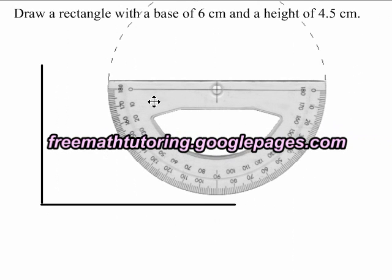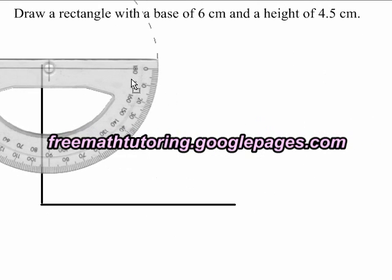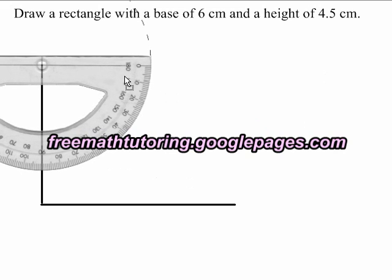At the top of the upright line, I use a protractor to draw another 90 degree angle. I make this one 6 cm long.